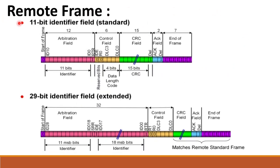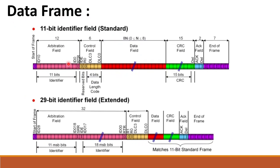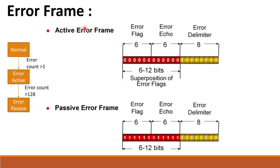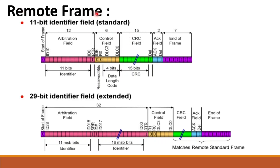The remote frame is used when I want to request data from another node to our node. The main difference between data frame and remote frame is that the RTR bit should be one — the remote transmission request bit should be one — in both standard and extended CAN frame formats. Also, there is no data field in the remote frame, because we are requesting data from the other node.